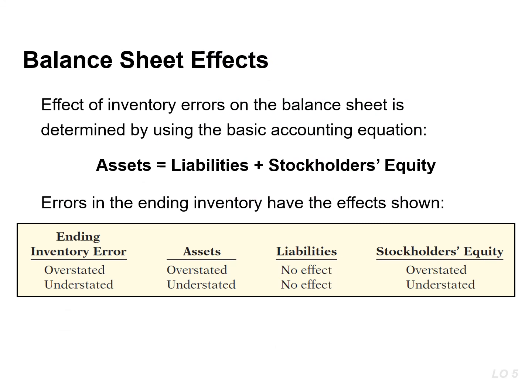The effect of ending inventory errors on the balance sheet can be determined by using the basic accounting equation: assets must equal liabilities plus stockholders' equity. If the ending inventory is overstated, then the assets will be overstated, there's no effect on liabilities, and stockholders' equity will also be overstated. Whereas, if the ending inventory is understated, the assets will be understated as well as stockholders' equity.